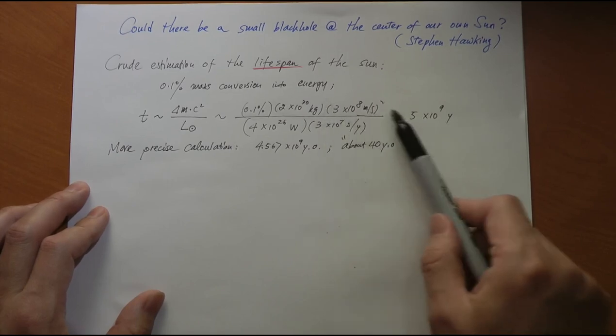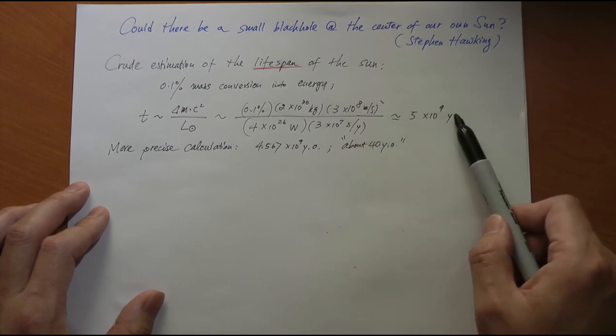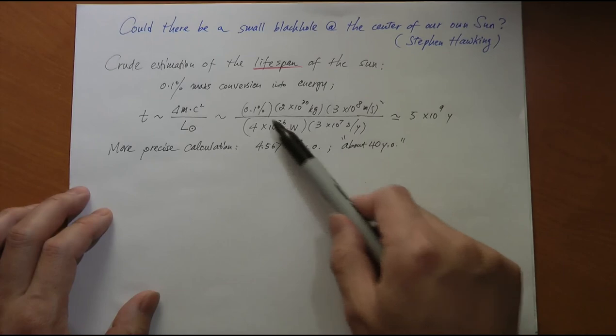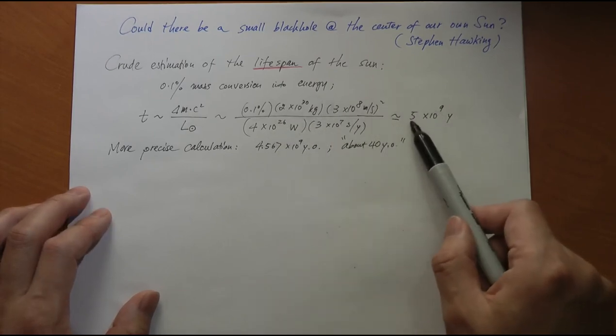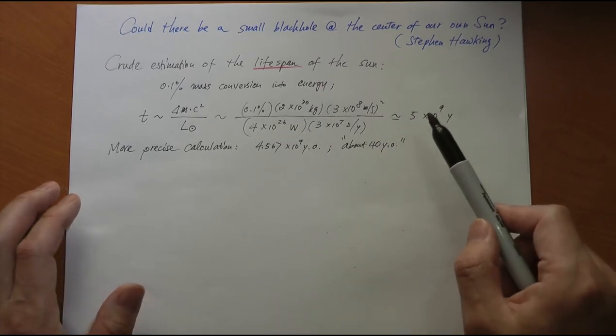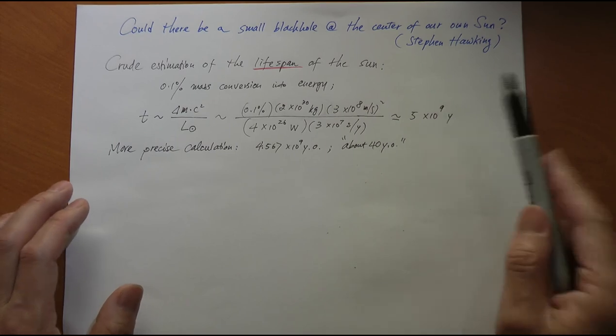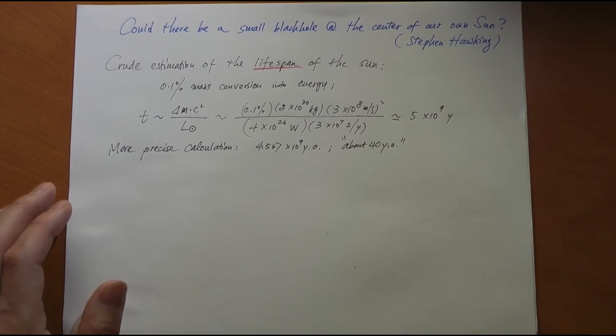Looking at Δm, which is 0.1% mass of the entire sun, all this matter turns into energy multiplied by c^2, that's how much energy is emitted, divided by the rate at which energy is emitted at the current rate, which is about 4 times 10^26 watts. What you're getting is how long this energy emission is going to last in seconds. Convert seconds to years, and the answer is about 5 times 10^9 years, or 5 billion years. This is the crude estimation.